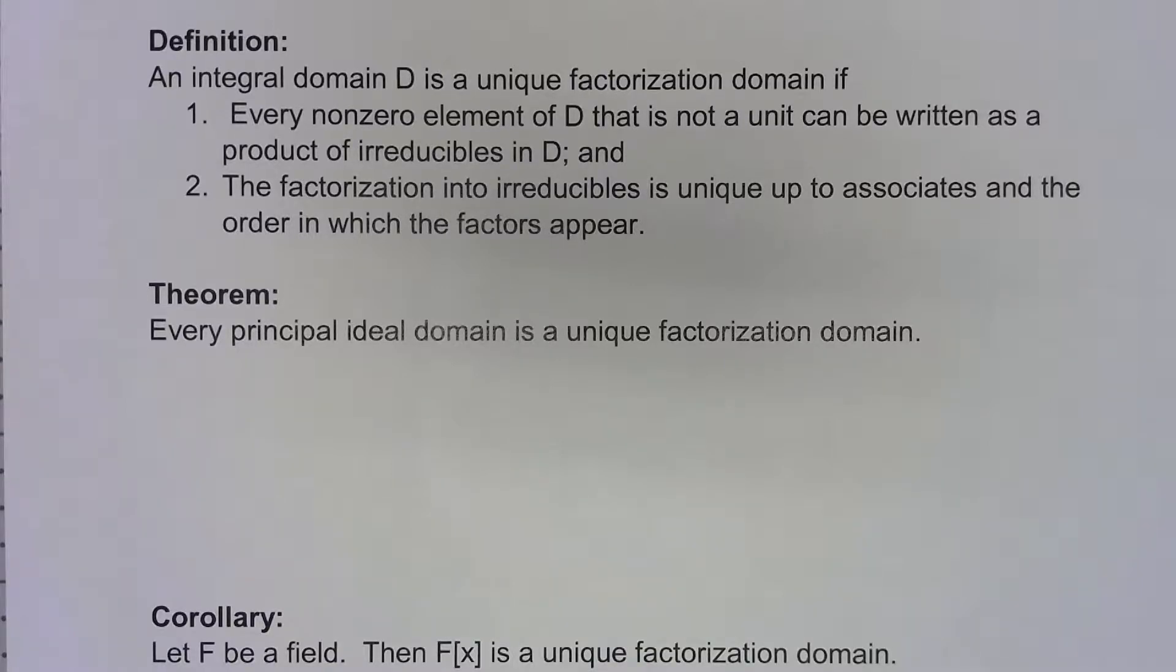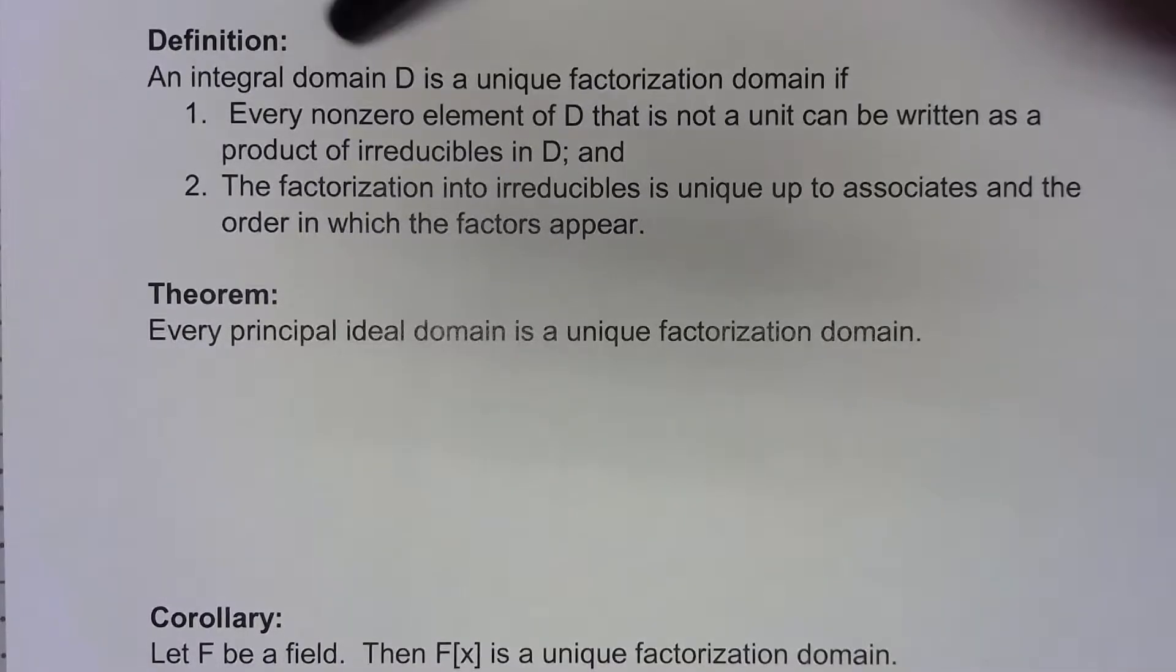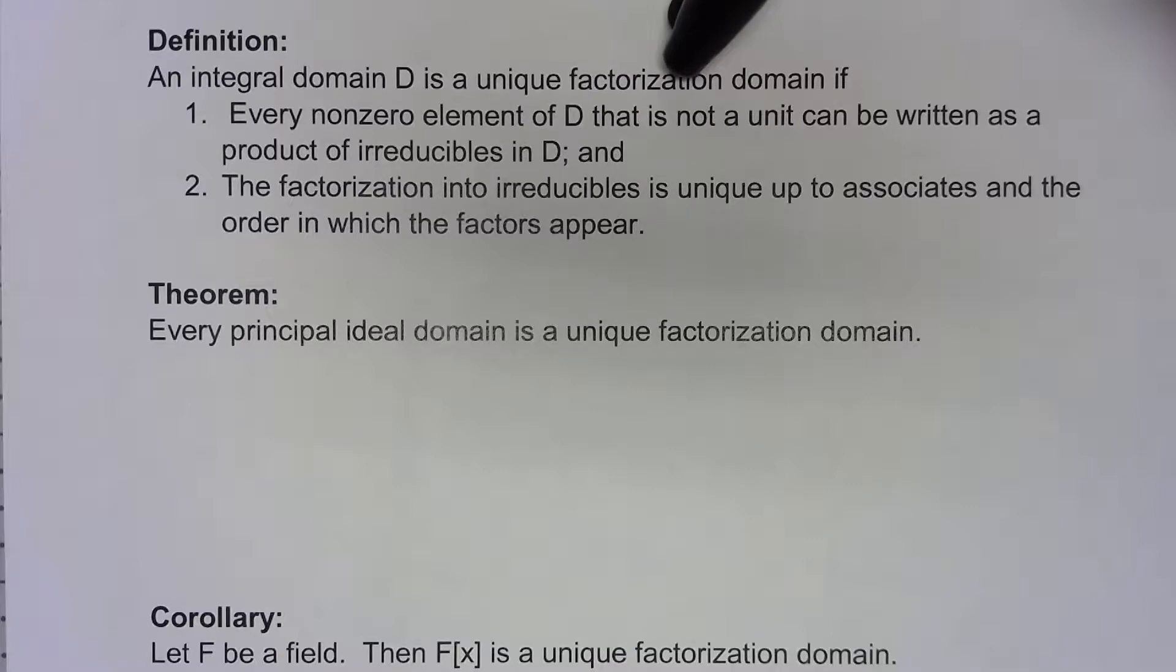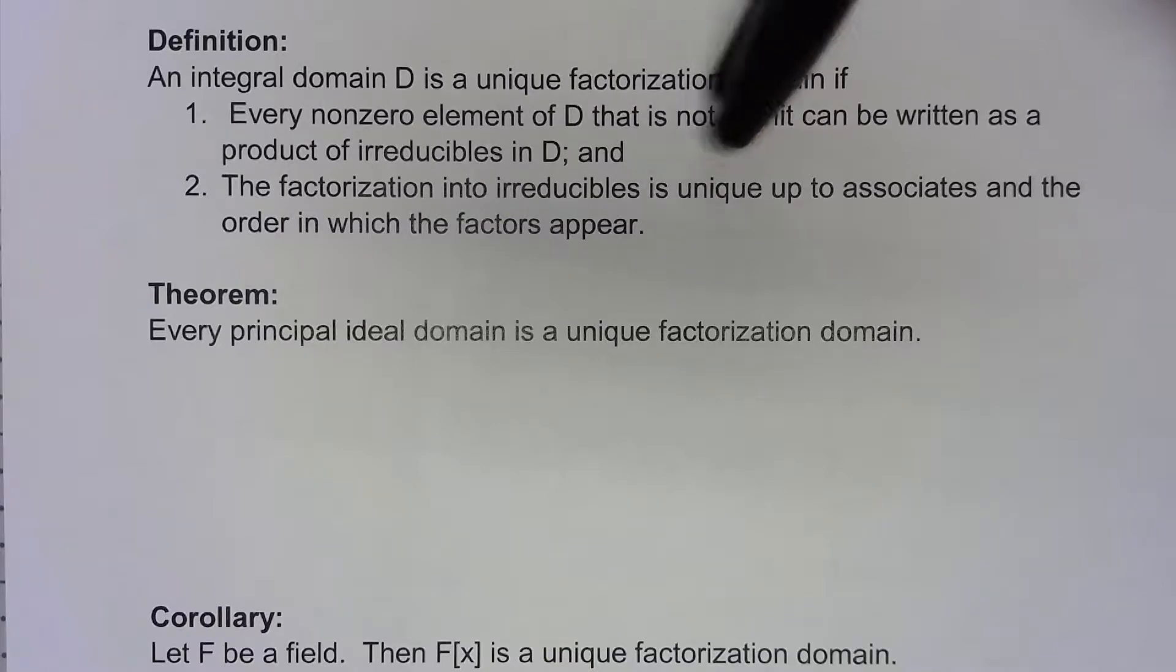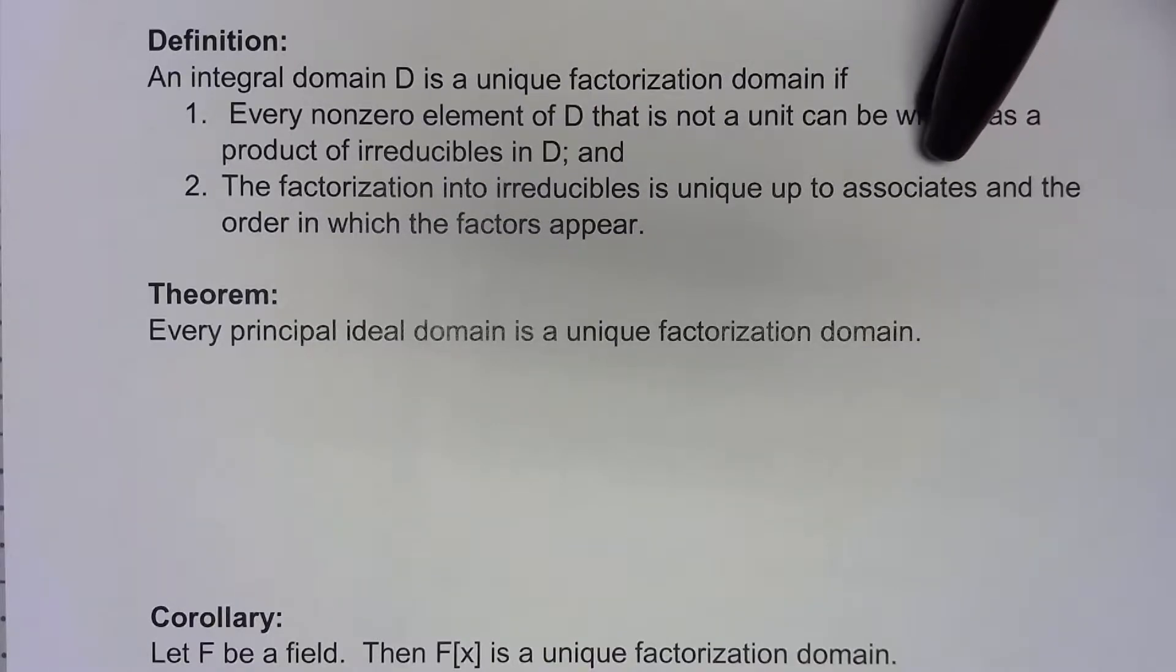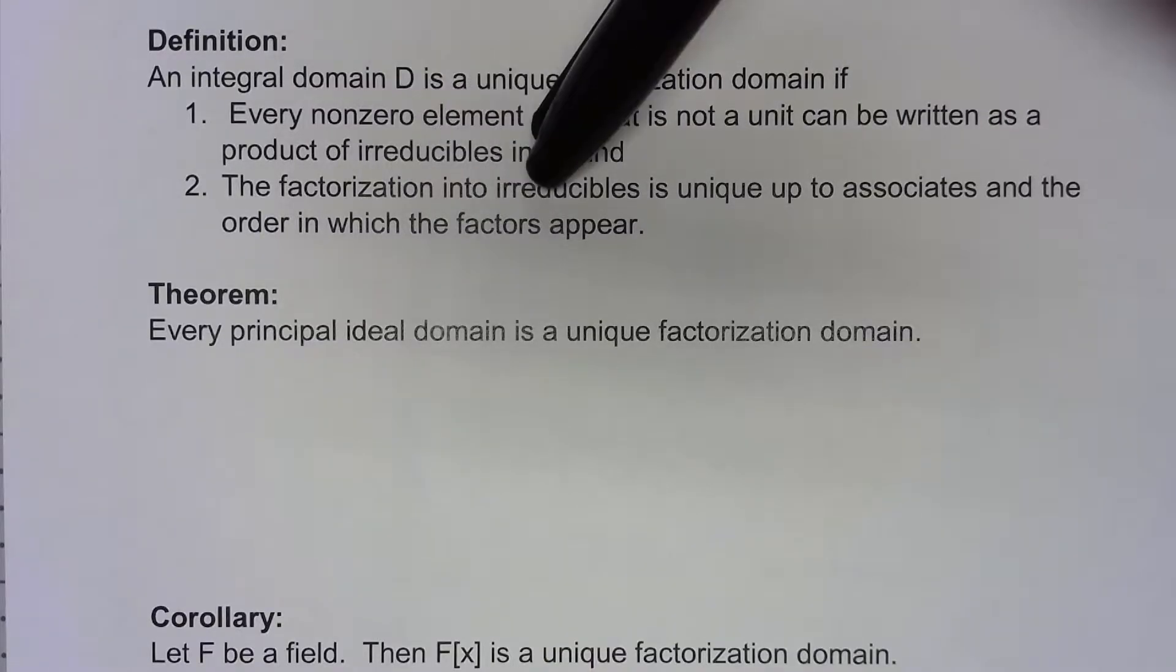Let's take a look now at a few special types of integral domains. If we've got an integral domain D, we're going to call it a unique factorization domain if every non-zero element of D that's not a unit can be written as a product of irreducibles and the factorization into irreducibles is unique up to associates and the order in which the factors appear.